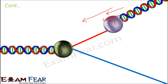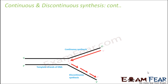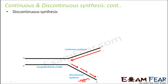Now we need to understand how DNA polymerase will create a new strand on the lagging strand side through discontinuous synthesis. Initially, it was assumed that continuous synthesis takes place on both strands. But scientist Okazaki argued that since the two strands of DNA are anti-parallel to each other, continuous synthesis cannot take place on both strands.